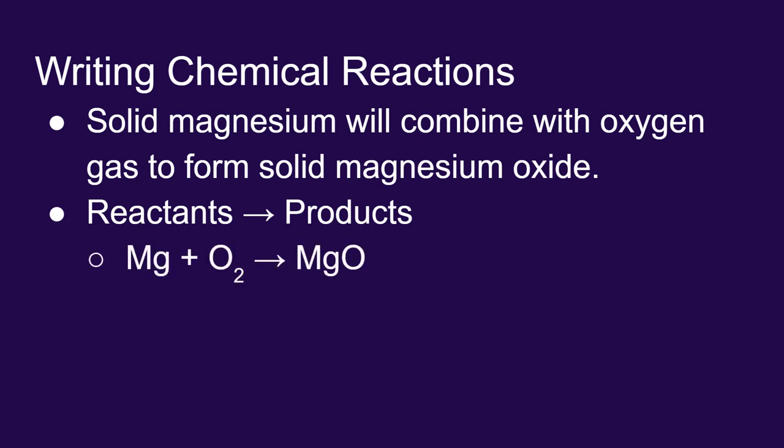In this case, we would say magnesium, symbol Mg, plus oxygen. Now remember, oxygen is one of our diatomic elements. So we would write it as O2, and that turns into magnesium oxide. We remember that magnesium forms a plus 2 as an ion and oxygen forms minus 2 as an ion. So magnesium oxide is simply written as MgO. That shows our reactants turning into our products.